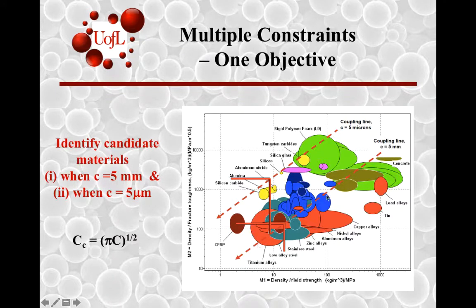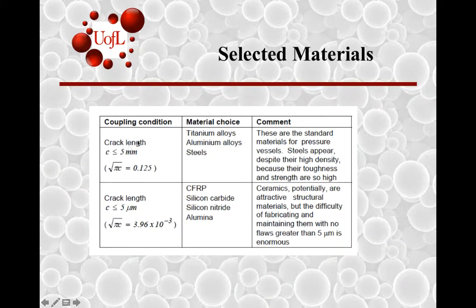In the first case, you have basically some of the ceramics that come in handy. But when you go with large crack lengths, you will need to have materials that can tolerate large cracking, and so at that point you end up going with titanium, steels, aluminum alloys. So when crack length can be large, metals dominate despite their high density; their toughness and strength work in their favor, and these are the safer materials to use.